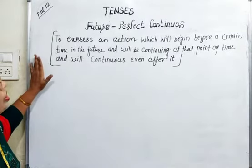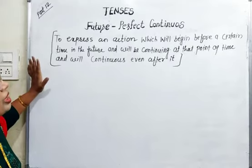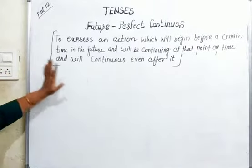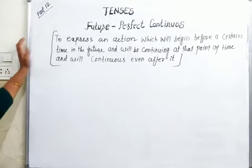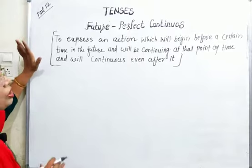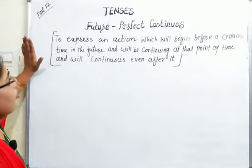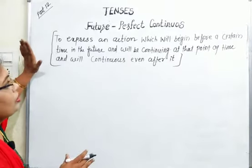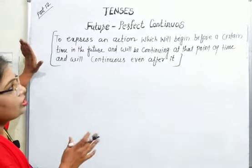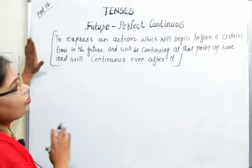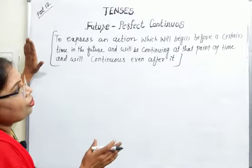Future perfect continuous tense is used to express an action which will begin before a certain time in the future and will be continuing at that point of time, and will continue even after it.